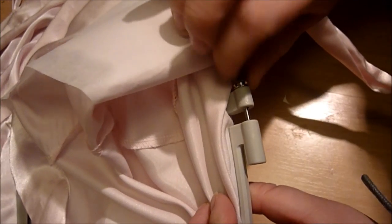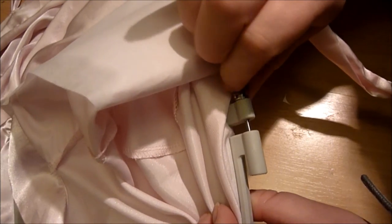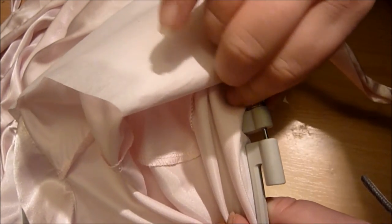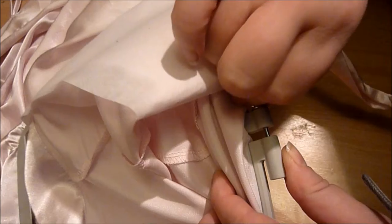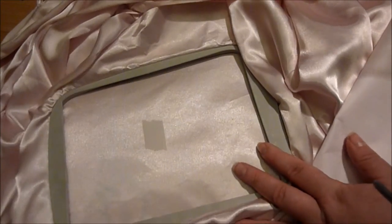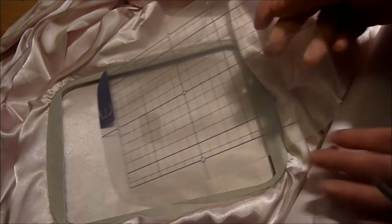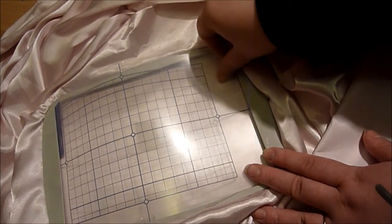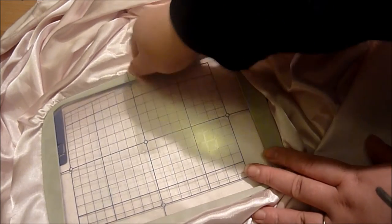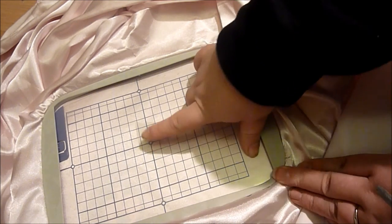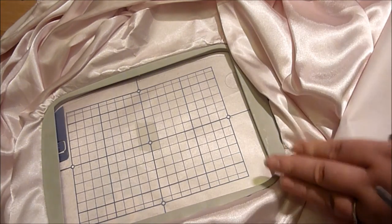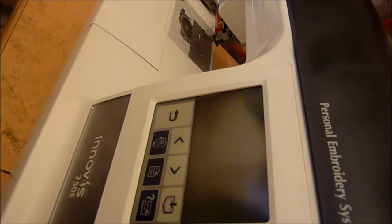You can also check whether this is centered by using this. So basically you just slip this in like that, and where that is, that is your center. And so we're pretty close there, so I think that would be fine for this project to keep that there. So I'm ready to actually go over to the embroidery machine.